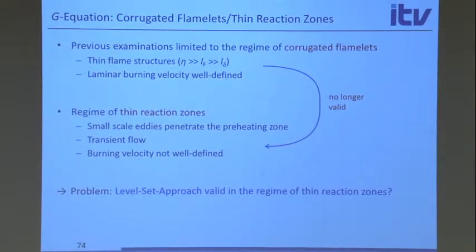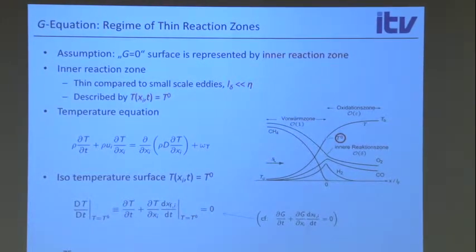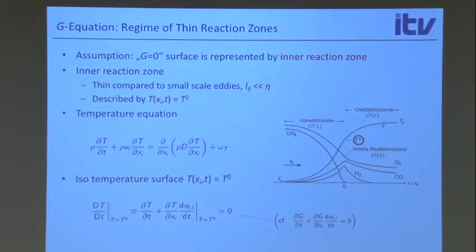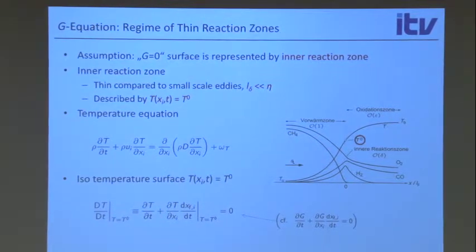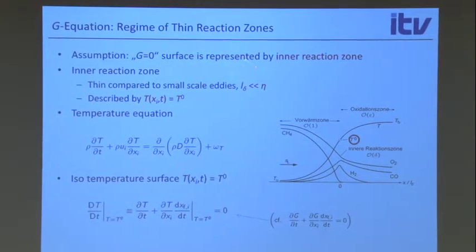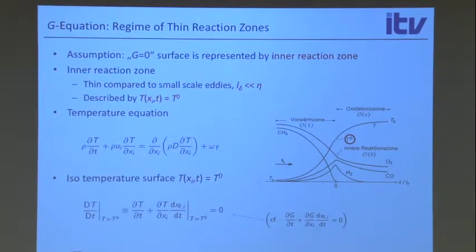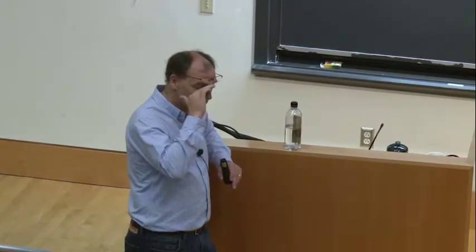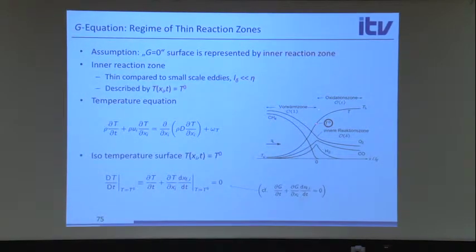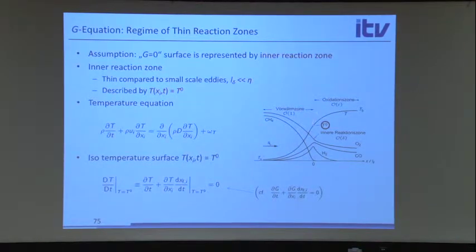I need to speed up a little bit and not talk about all the little details, but give you the general idea. The general idea is that instead of saying the level set represents the flame, we say the level set represents just a temperature isosurface. The most important temperature is the inner layer temperature T₀, so we want to derive a level set equation that represents the isosurface of T equal to T₀.